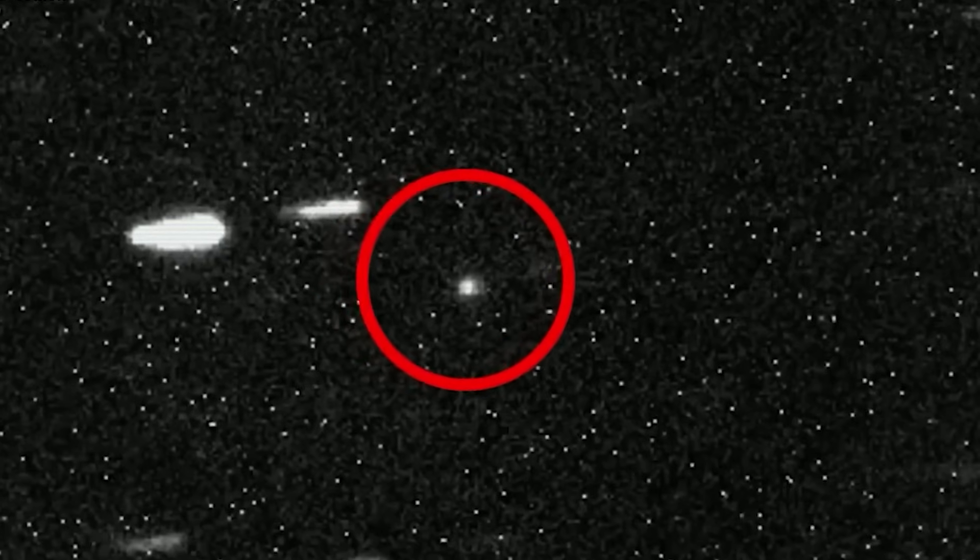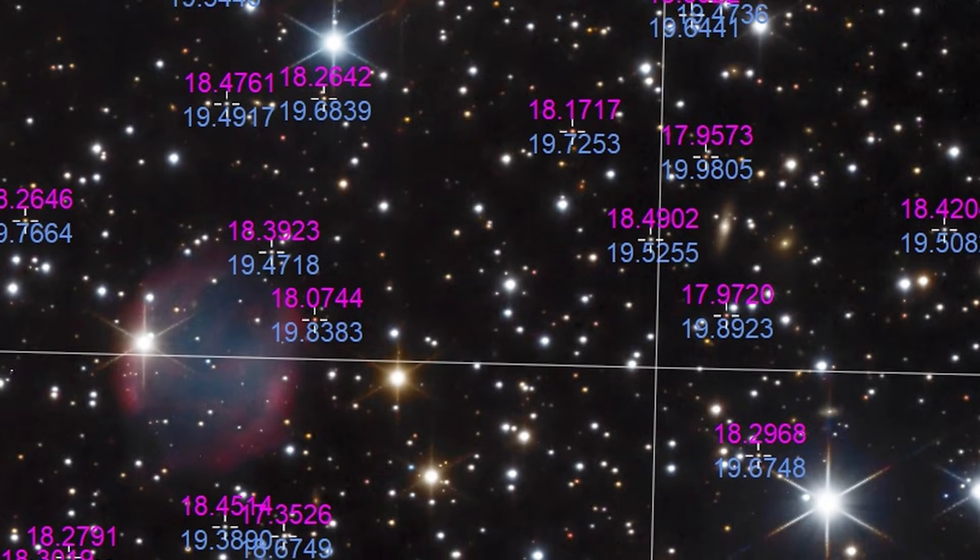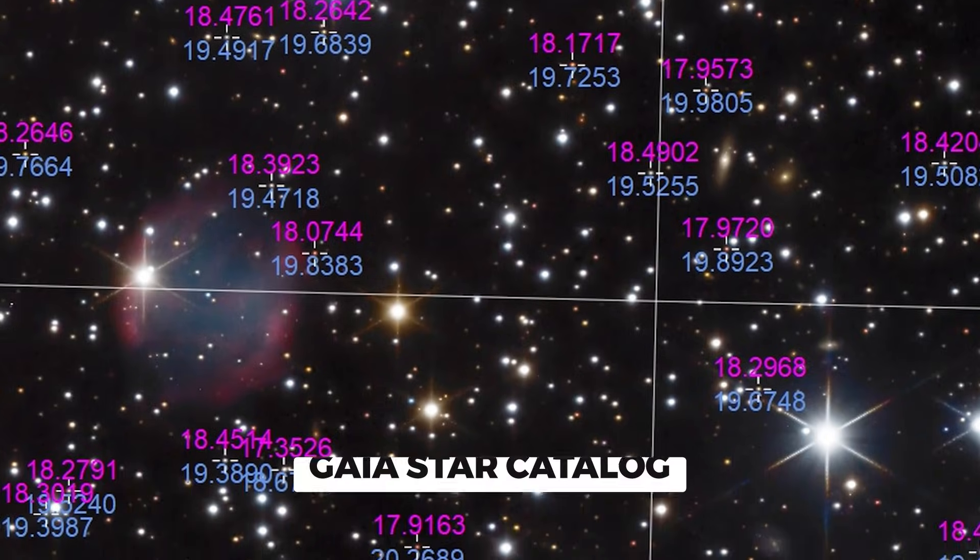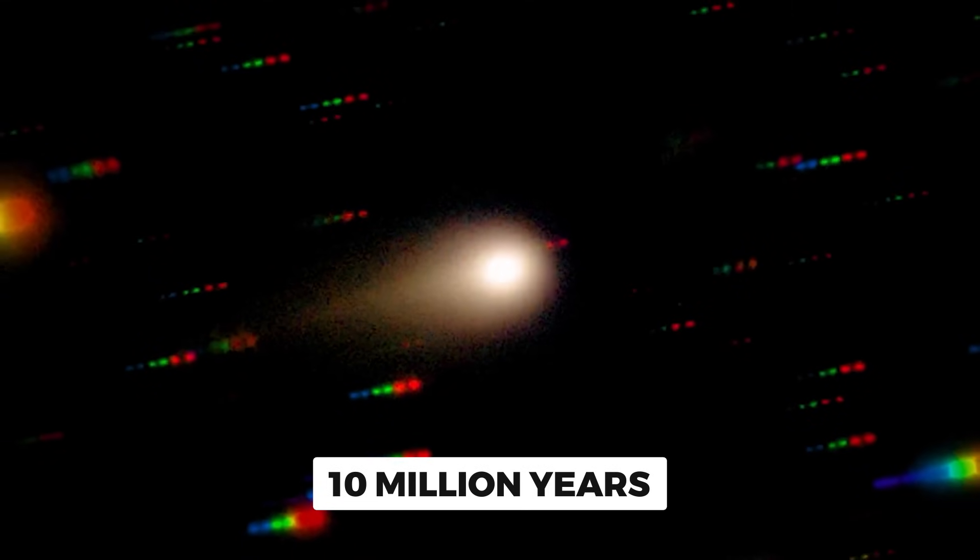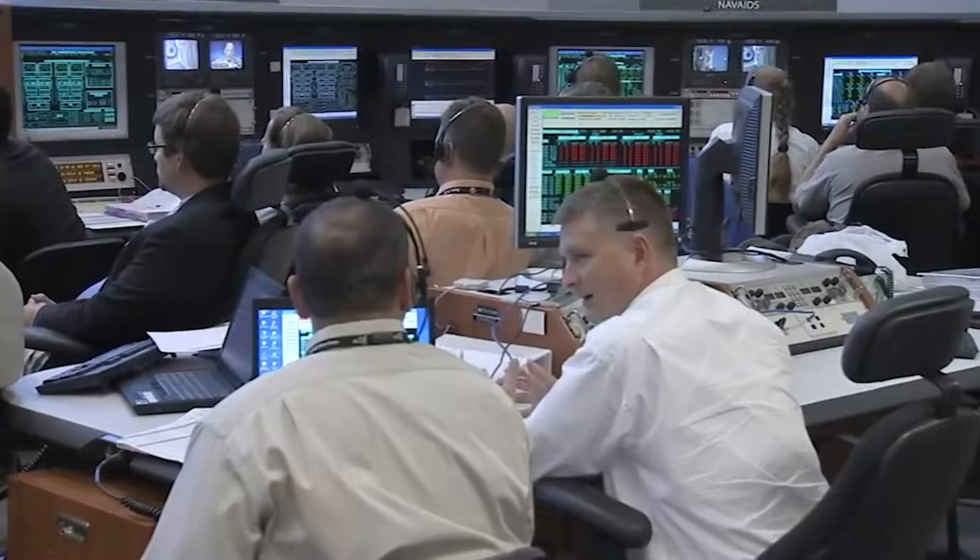But here's what makes this truly remarkable. Based on careful analysis of stellar positions in the Gaia star catalog, scientists determined that 3I Atlas hasn't been close to any star in at least 10 million years.